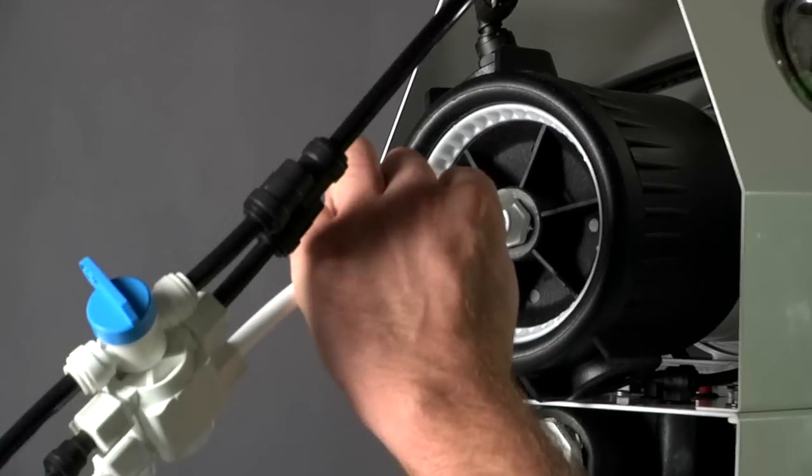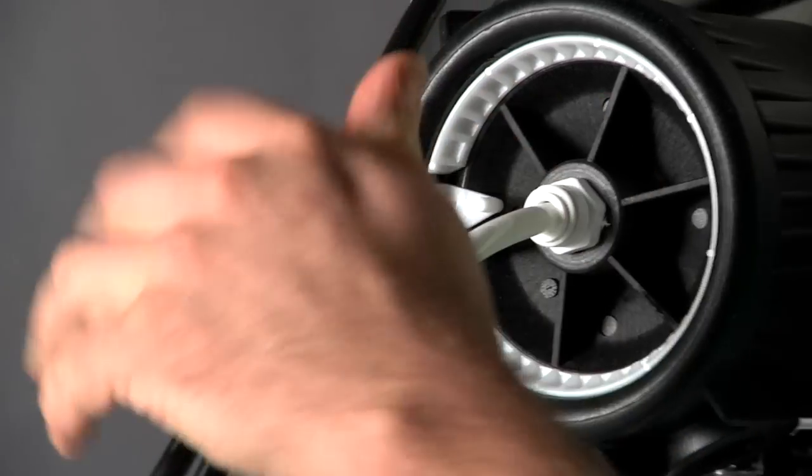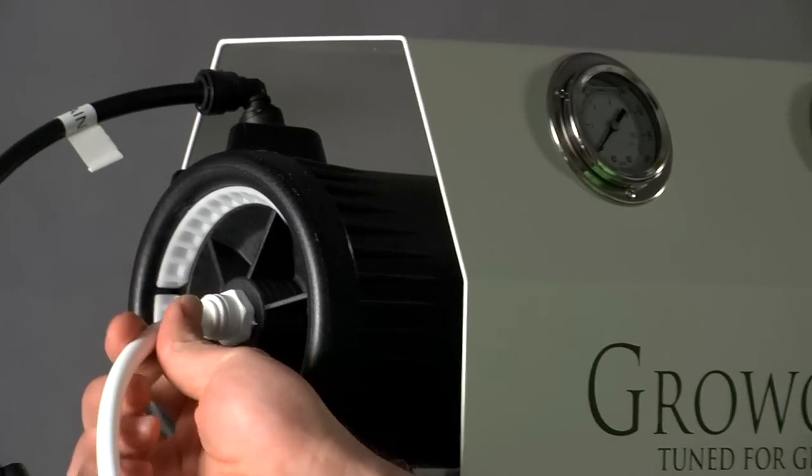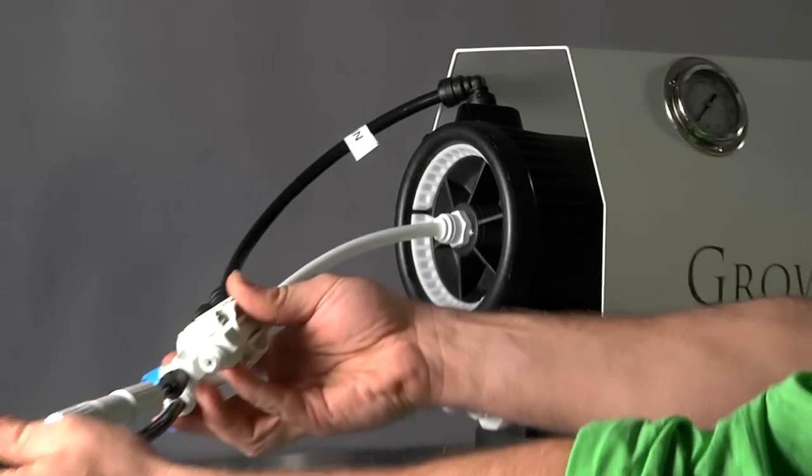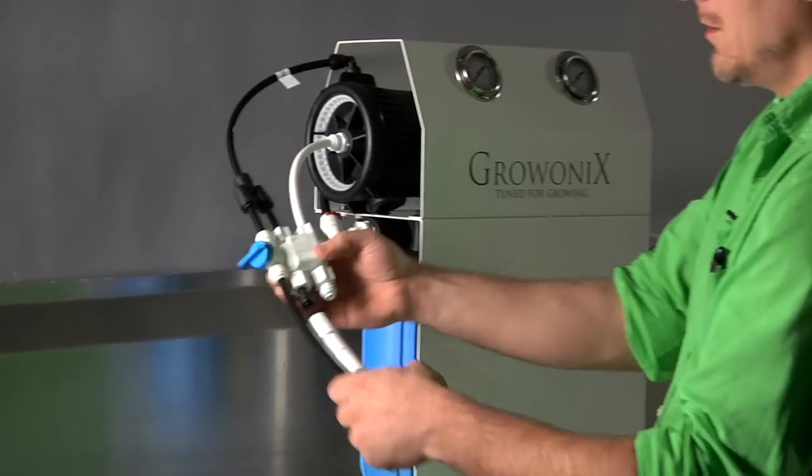And the white tube is our RO out, which goes right here. I'm just going to push that in, making sure it seats all the way in there. Now you can extend this tube as well if you want your drain assembly to come out this way or out the back of your unit. We give you plenty of tubing in the box. Shape it any way you want.